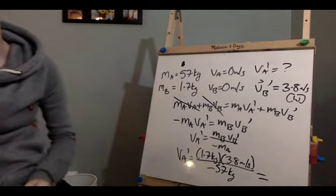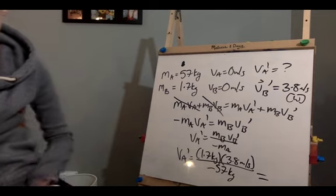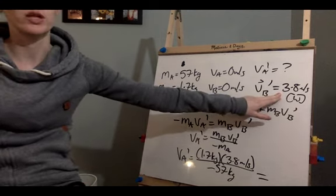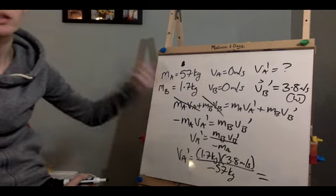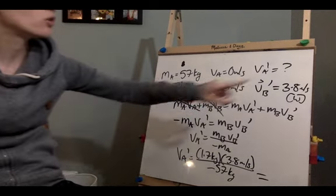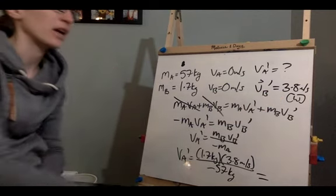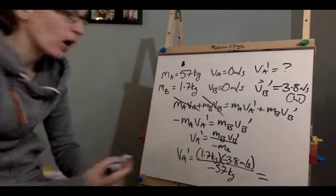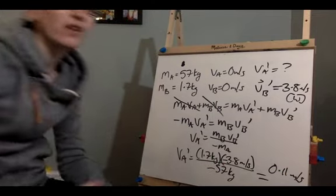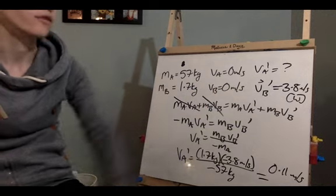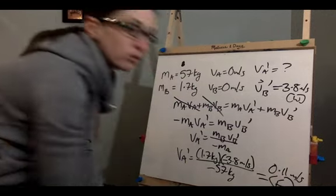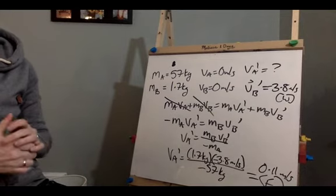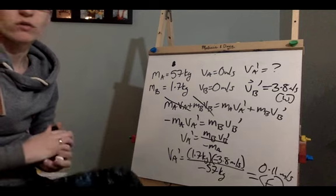Calculating gives −0.11 m/s. If you call west negative, then −(−0.11) gives positive 0.11 m/s east. Either way, your recoil velocity is 0.11 m/s to the east (2 significant figures).